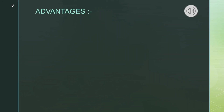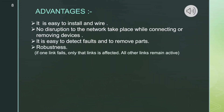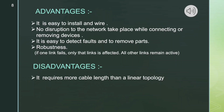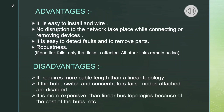Advantages of star topology: it is easy to install and wire; no disruption to the network takes place while connecting or removing devices; it is easy to detect faults and to remove parts. If one link fails, only that link is affected — all other links remain active. Disadvantages: it requires more cable length than a linear topology; if the hub, switch, or connector fails, all attached nodes are disabled; it is more expensive than linear bus topologies due to the cost of the hub.